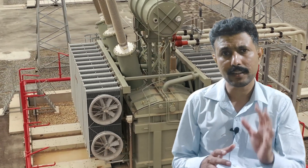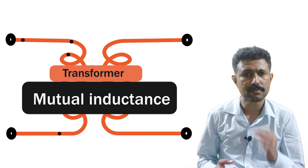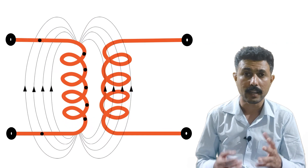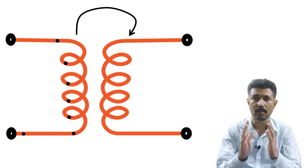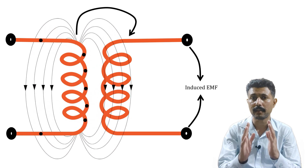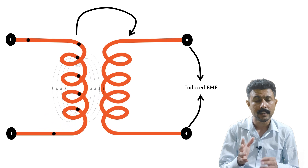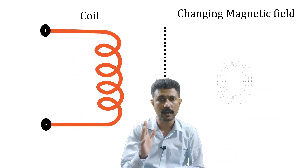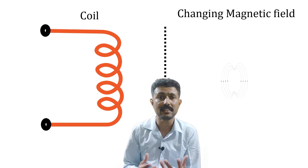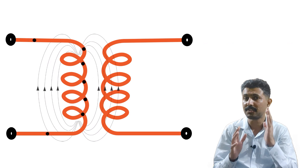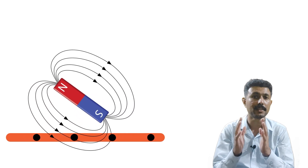To understand why a transformer works with only AC and not DC, let's understand the basics. A transformer works on the mutual inductance principle. When the changing magnetic field of one coil links with another coil, it induces EMF in that coil — this is known as mutual inductance. To produce EMF mutually there are two requirements: there has to be a coil, and there has to be a changing magnetic field. This changing magnetic field can be produced either through changing current or through relative motion between the two coils.